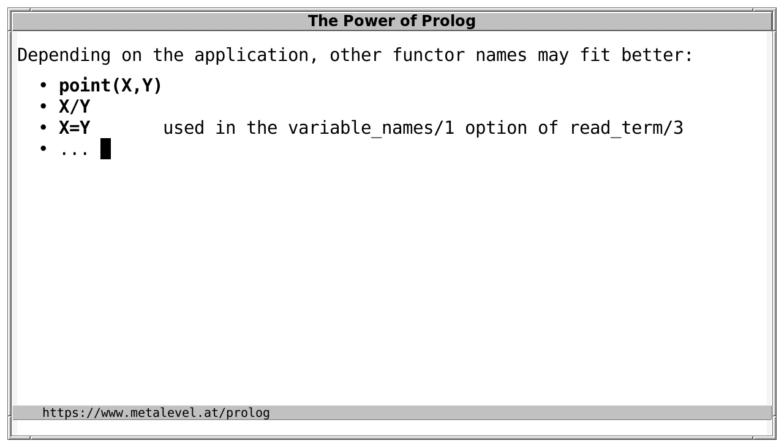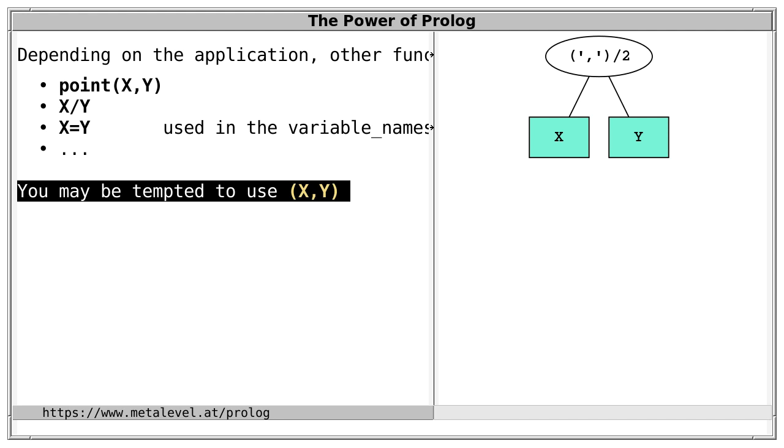There's also one caveat I'd like to add concerning the functor comma, because you may be tempted to use, for example, x comma y to denote a coordinate pair. Syntactically, the term is perfectly valid. It's a term with principal functor comma and arity 2.